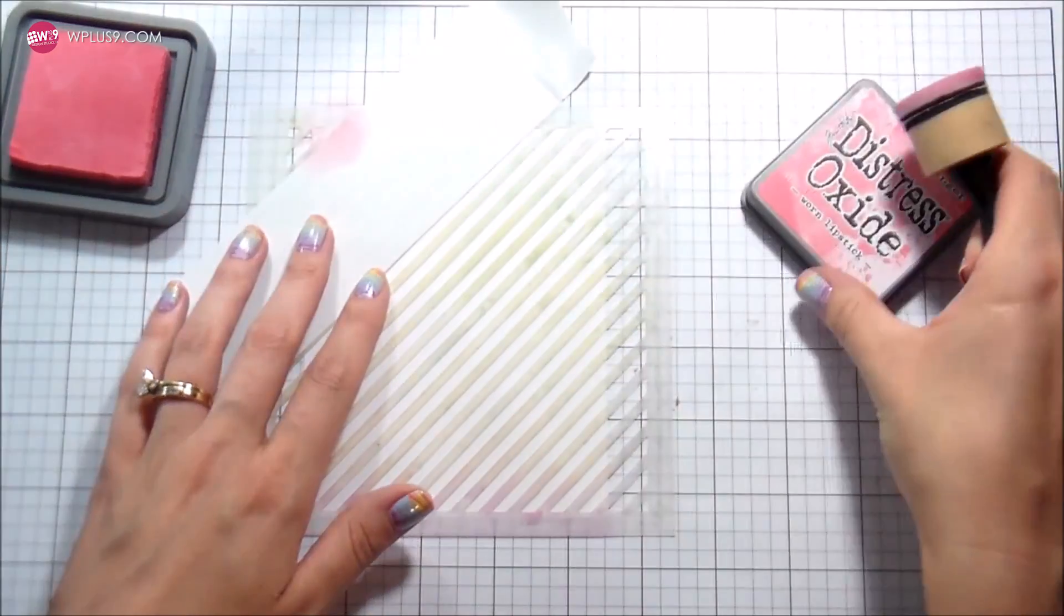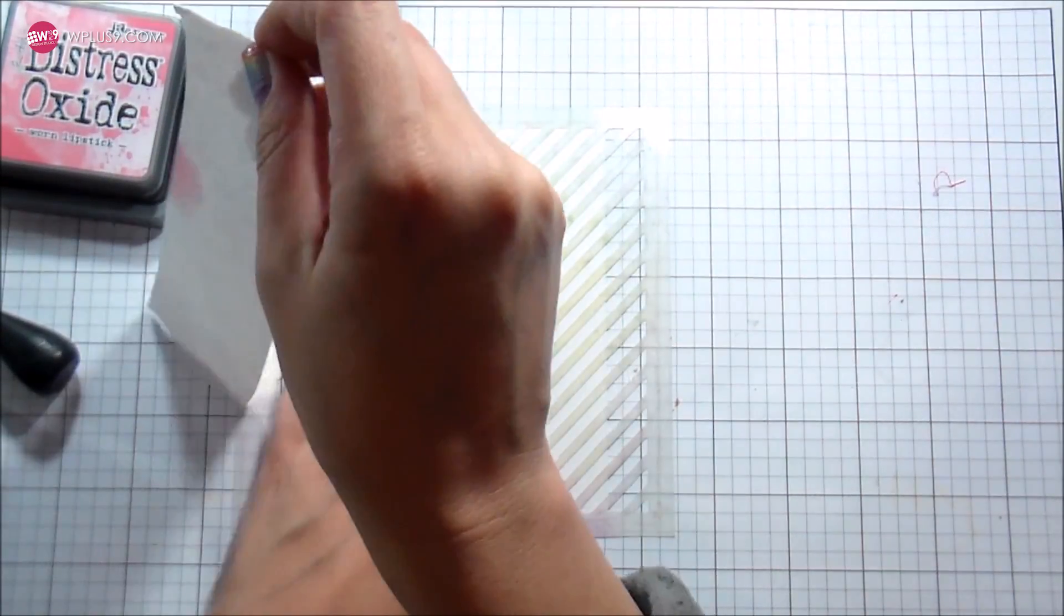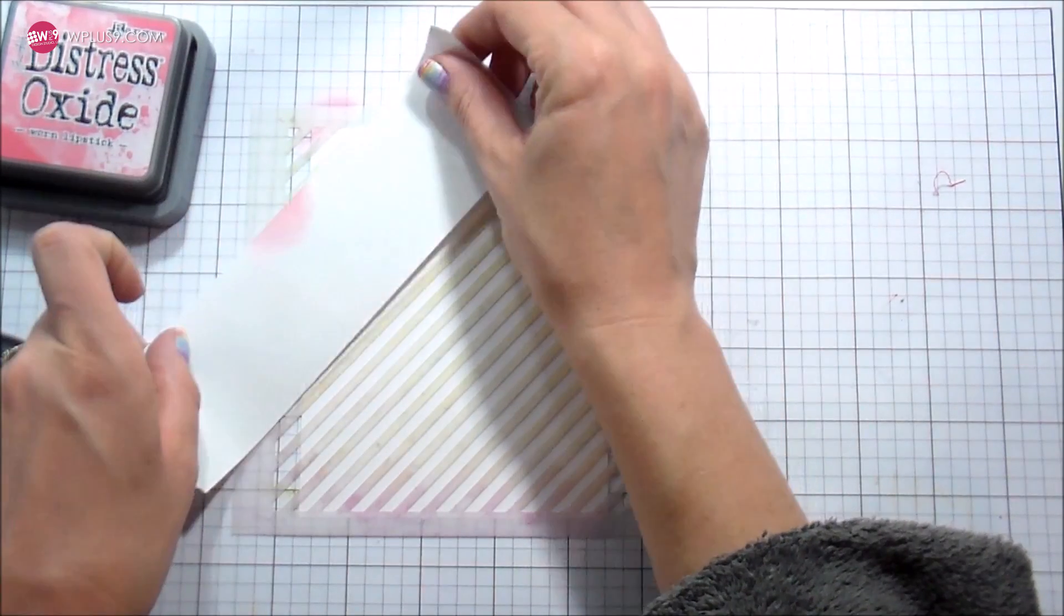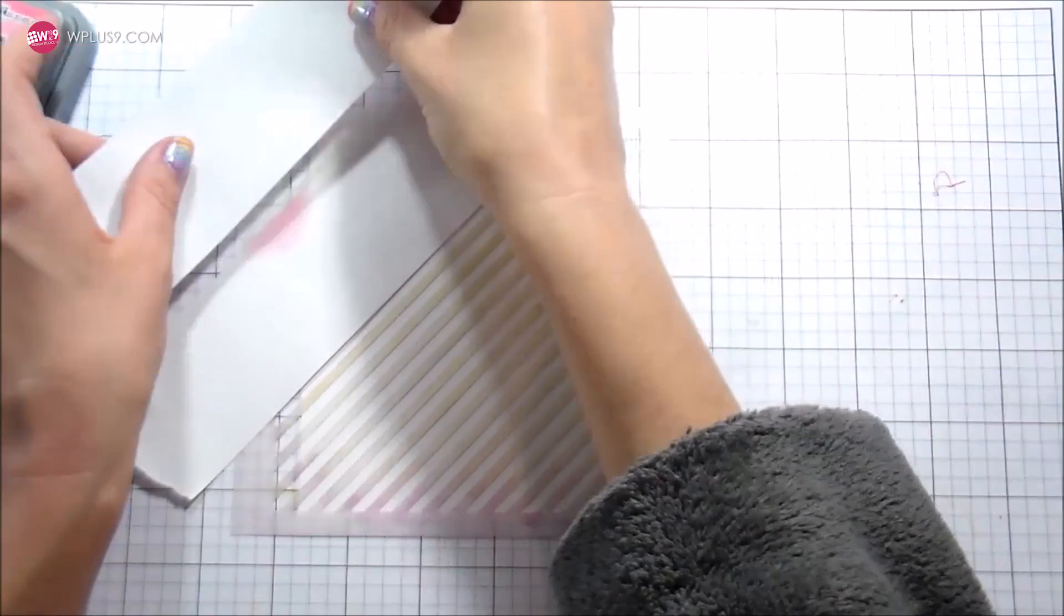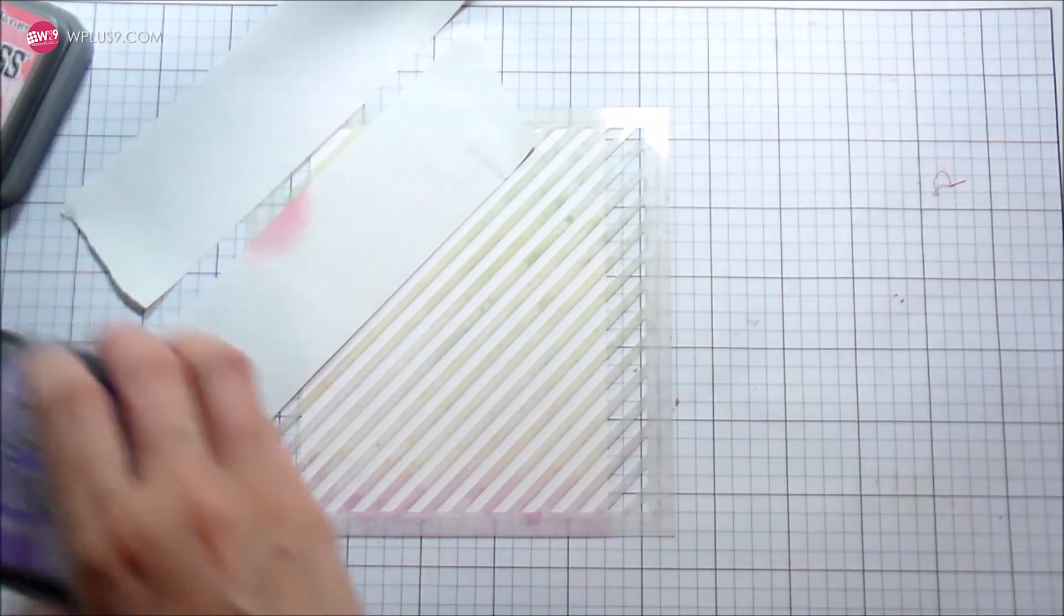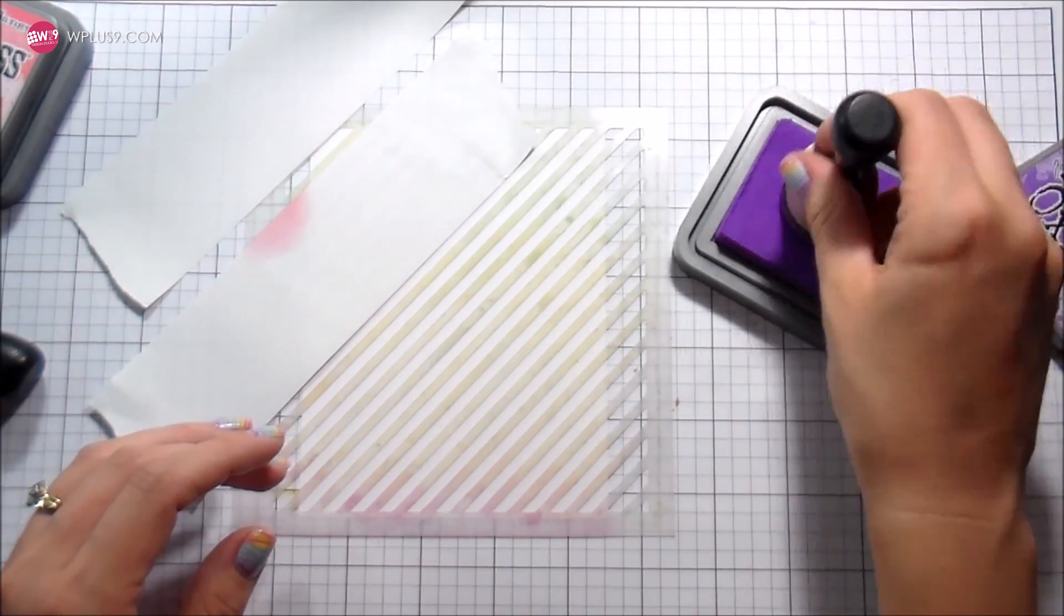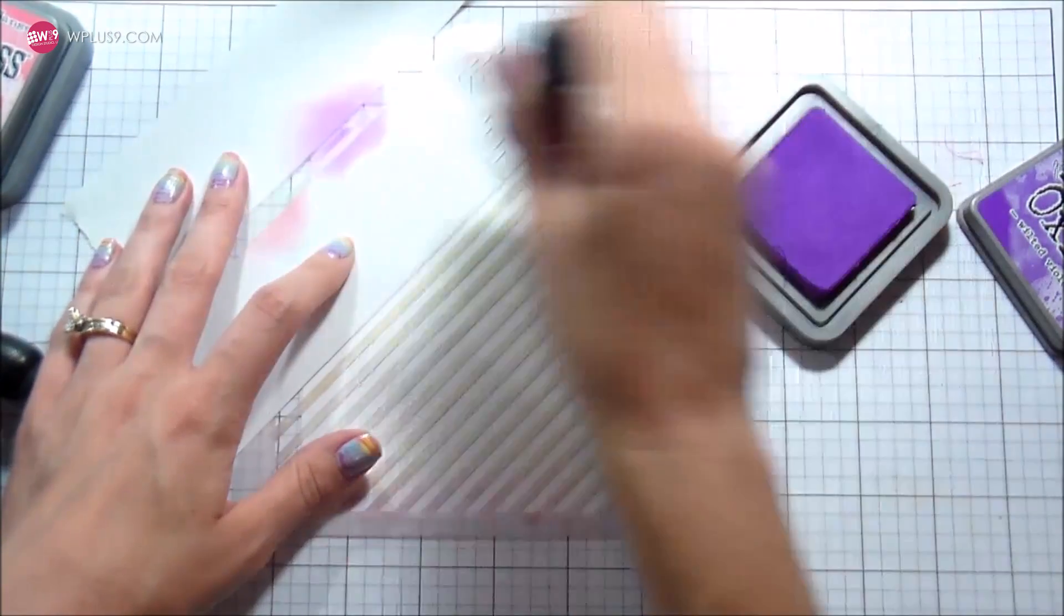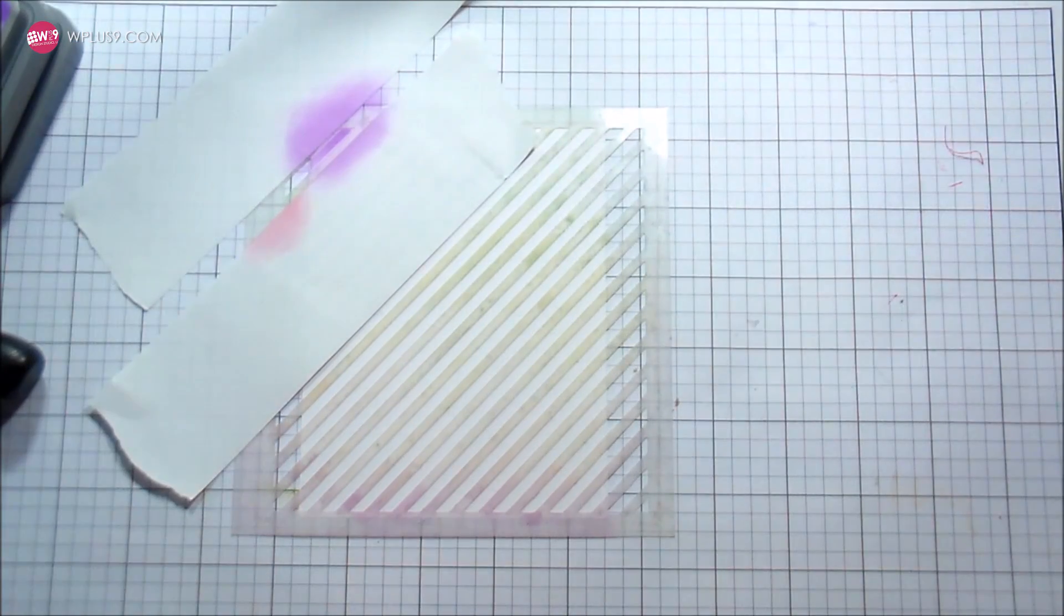So what I'm gonna do with this stencil is I picked some distress oxide inks and I'm gonna create my own rainbow stripe paper. I have this post-it masking tape that you see here and I'm going to be using that to mask either side. I could show you a couple of the colors. I started doing it just every other color.